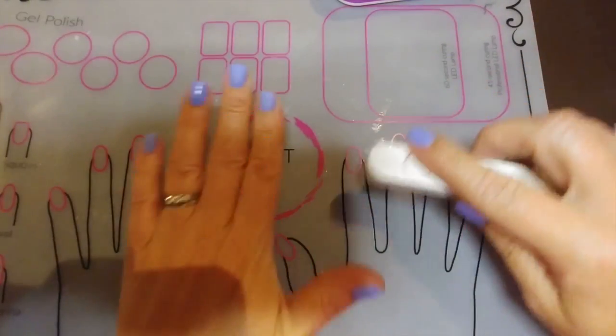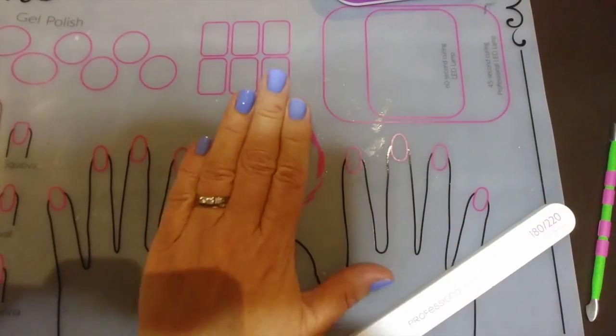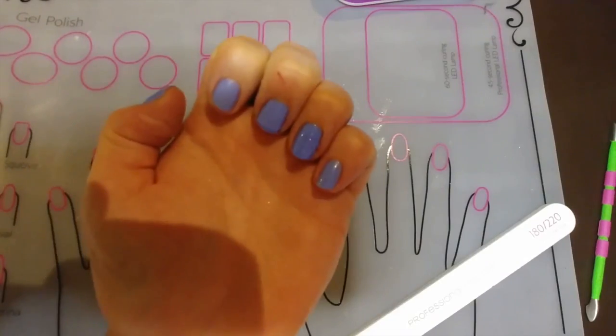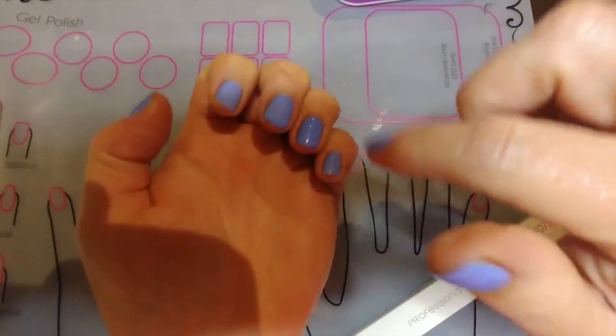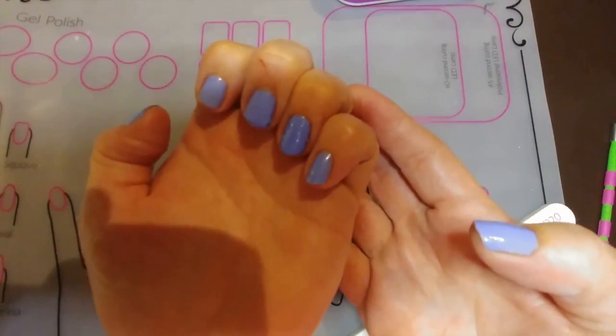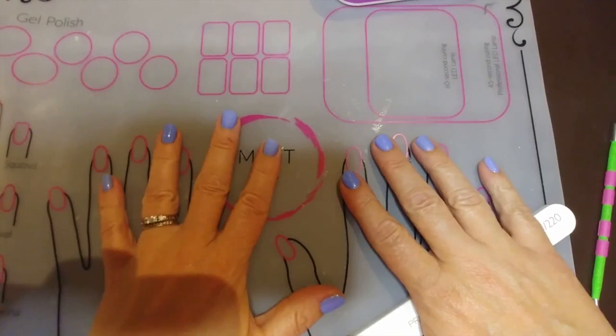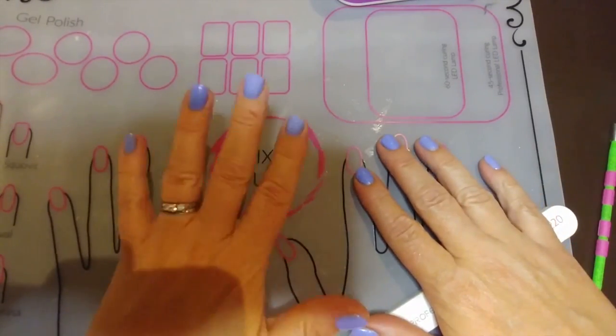And just like that, we have two matte nails and the glossy ones. Sorry for my finger, apparently I don't know how to open cereal boxes. But that's it, easy peasy shampoo squeezy. I hope you enjoyed this hack video. Talk to you soon, bye!